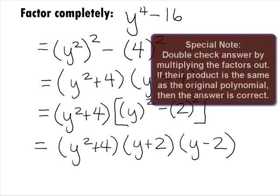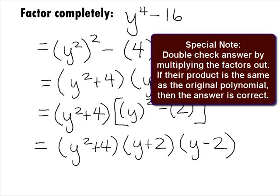Note that we can always double check ourselves on factoring problems by multiplying out the factors that we have. If they multiply to be the original polynomial, then we have the right factors. If they don't, we need to go back and try factoring the problem again. Note that if we multiplied this out, we would get the original binomial.